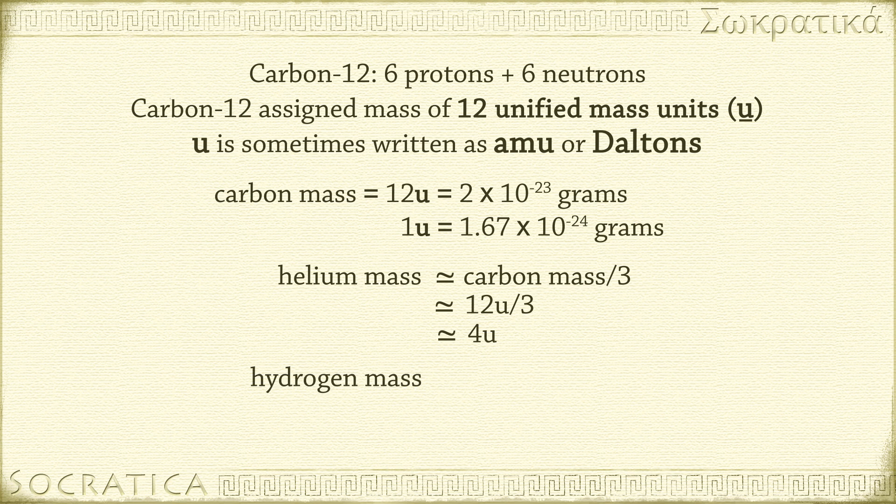12 u divided by 3 equals 4 u. Hydrogen, the smallest atom, is about 1 u, because it's about 1 twelfth the size of a carbon atom. 12 u divided by 12 equals 1 u.